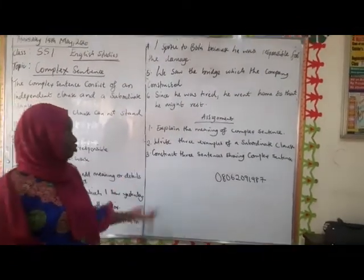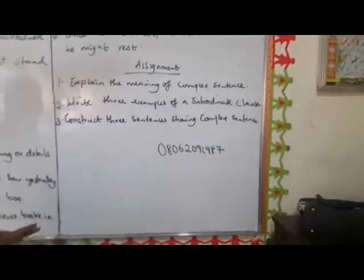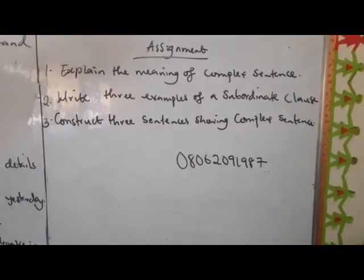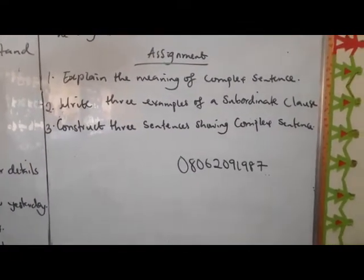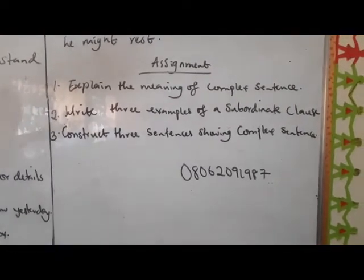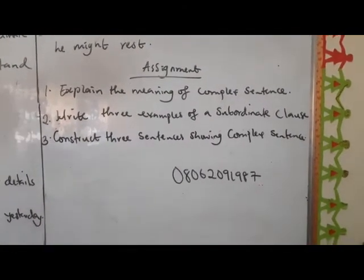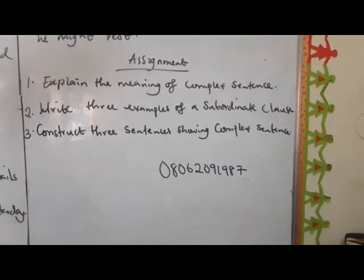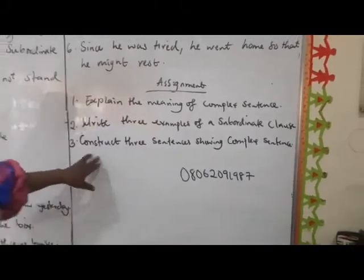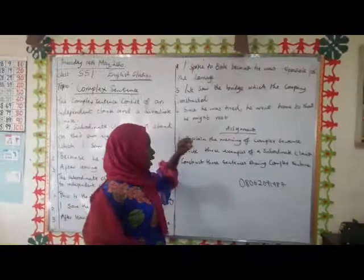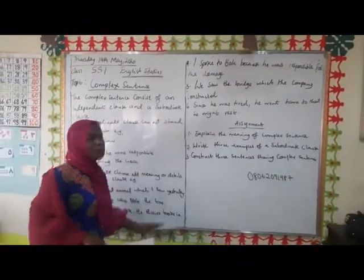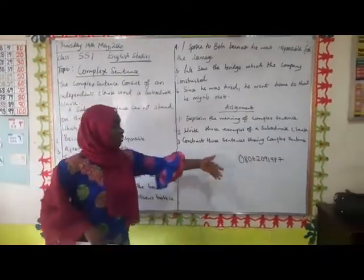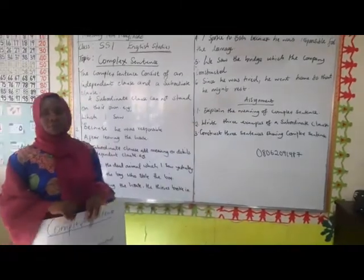There is something I want you to do. Number one: explain the meaning of complex sentence — what is a complex sentence? Number two: write three examples of subordinate clauses. If you have gone through the entire class with me, you will know that I introduced this topic by telling you what a complex sentence is and how a subordinate clause is formed. Number three: construct three sentences showing complex sentence. Knowing how to form complex sentences is the most salient part of our lesson. You can reach out to me if there is any question. Thank you.